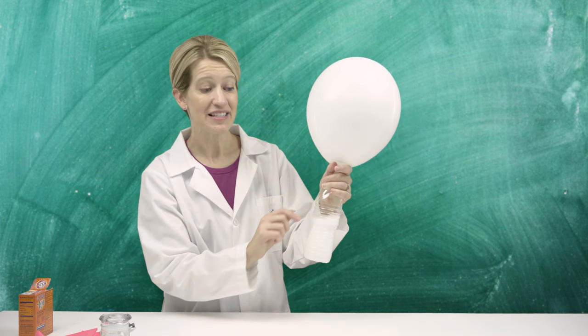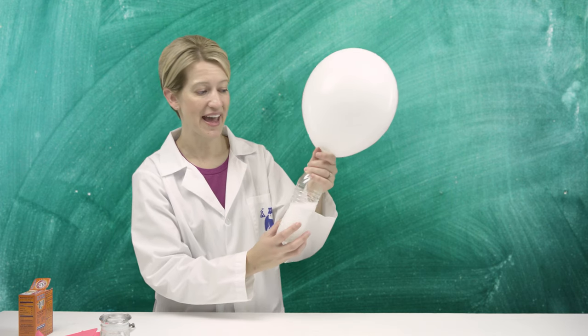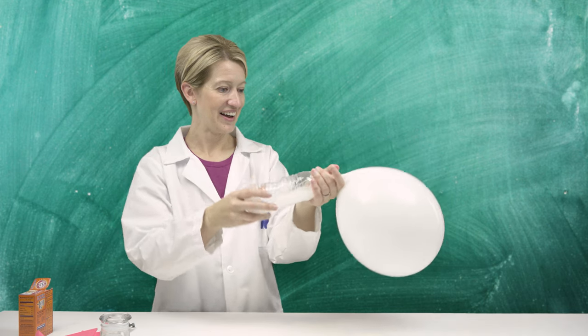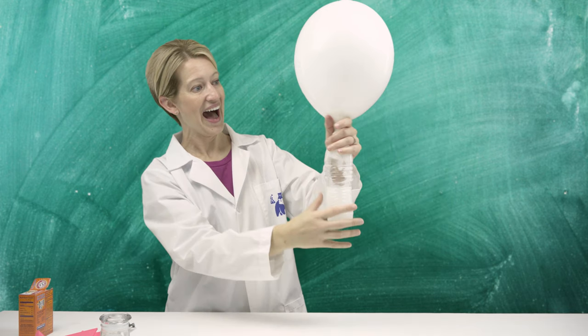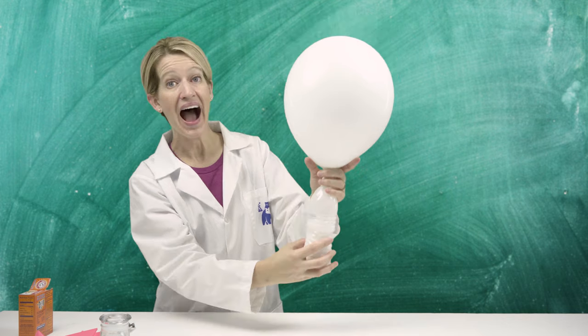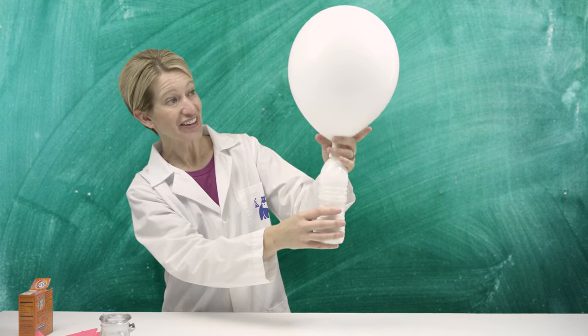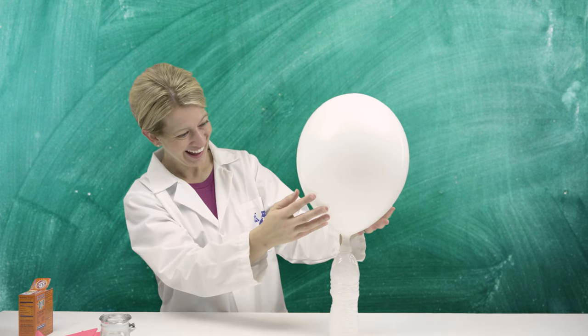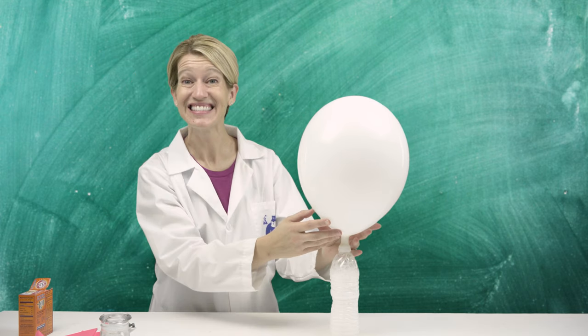And there's still some baking soda in the balloon. I have an idea. Make sure your parents are around if you're going to do this. Let's dump the water into the balloon and see if we can get the rest of the baking soda to have a chemical reaction with the citric acid. Ready? On the count of three. One, two, three. The balloon's getting bigger. Look, we did it. Great job, scientists.